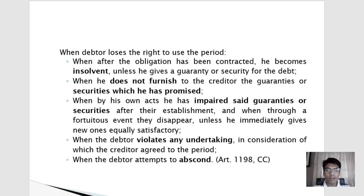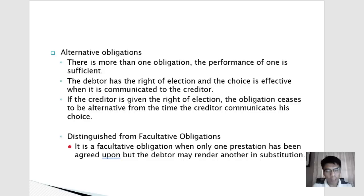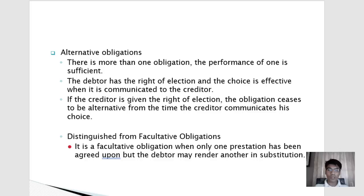In alternative obligations, there is more than one obligation and the performance of one is sufficient to extinguish the entire obligation. At the time of execution, the creditor is aware the debtor will be given the chance to perform one of several obligations. Here the debtor has the right of election, and the choice is effective when communicated to the creditor. The creditor may also be given the right to choose from these alternative obligations.